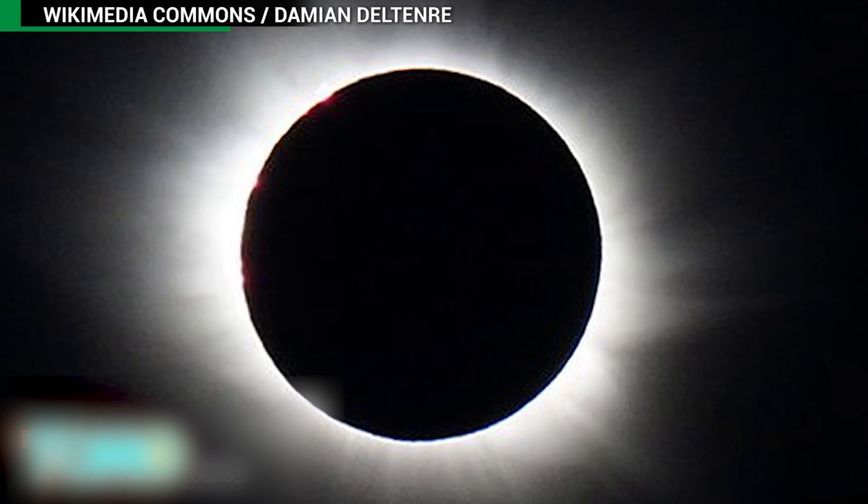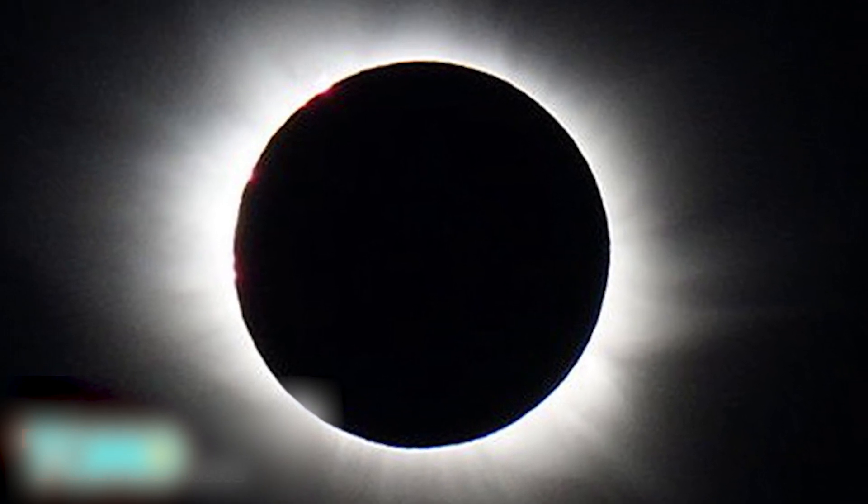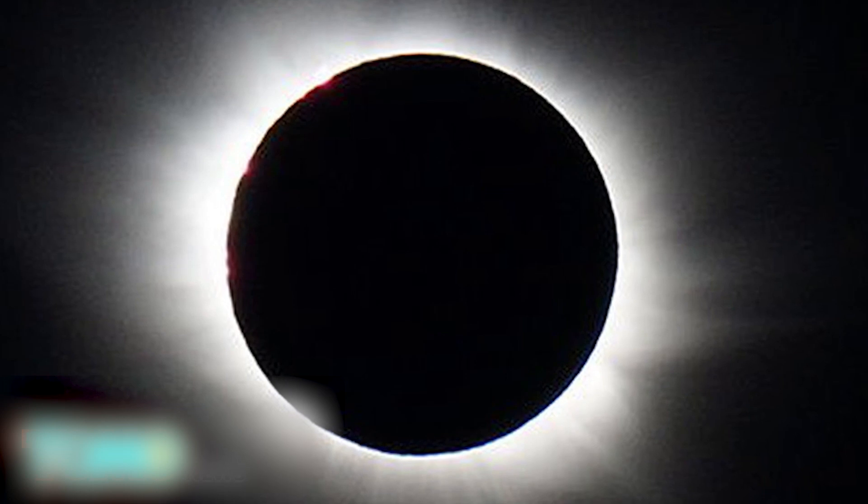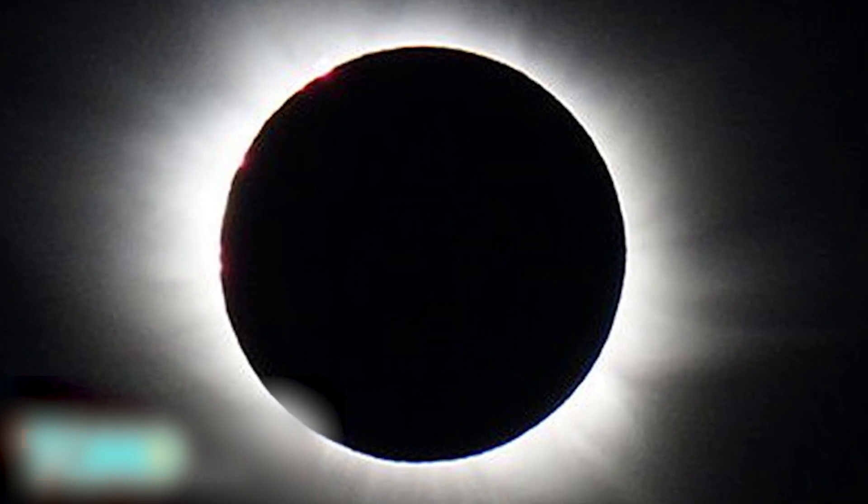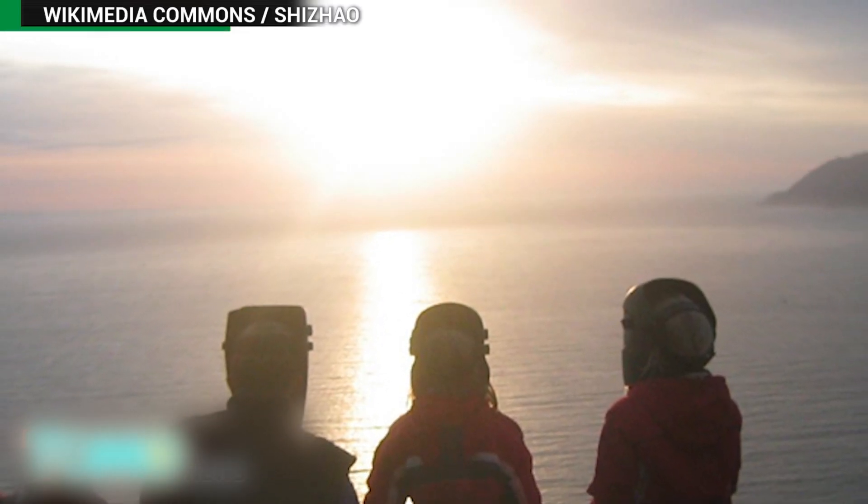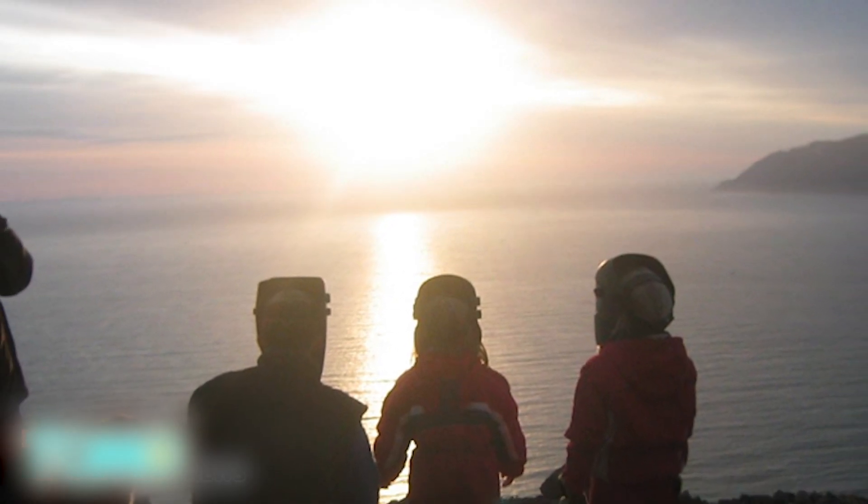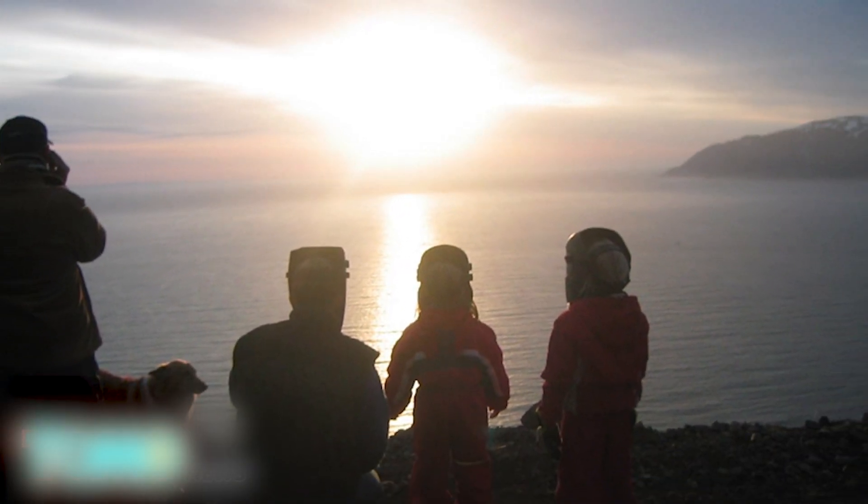The Great American Eclipse of 2017 will be the first total eclipse only visible in the U.S. since the country was founded in 1776. Total solar eclipses occur about once every 18 months, but it's rare for them to be so accessible. According to NASA, next year's eclipse will be the first to stretch across the entire country since 1918.